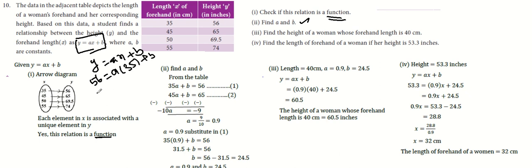That's why 35a plus b equals 56. For the second equation, 45a plus b equals 65. We will subtract these two equations.